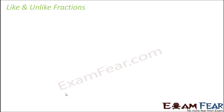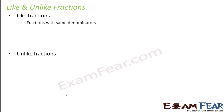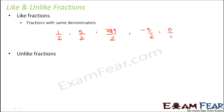When we talk about fractions, it is also important to discuss like and unlike fractions. Fractions with the same denominators are called like fractions. For example, 1/2, 5/2, 789/2, minus 5/2, and 0/2 are all like fractions because they all have the same denominator, which is 2.